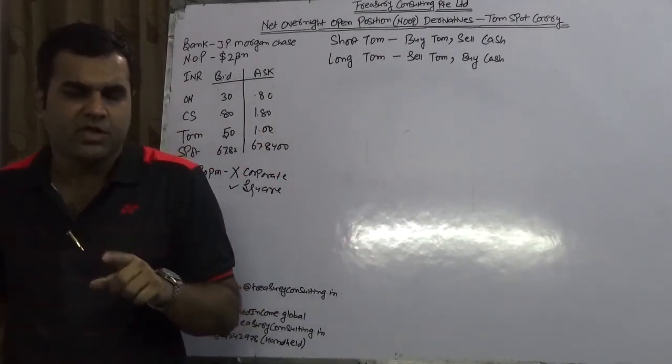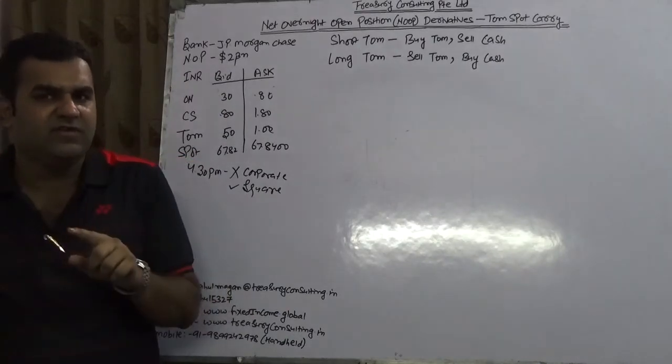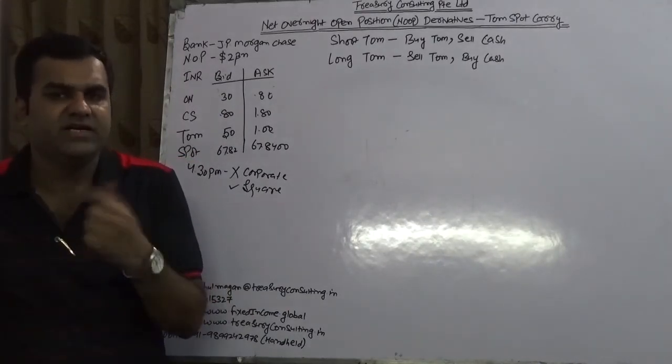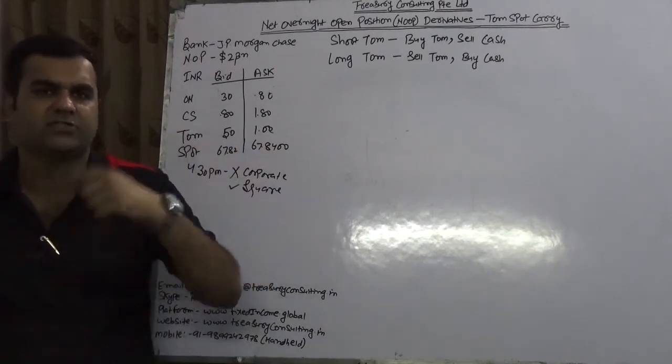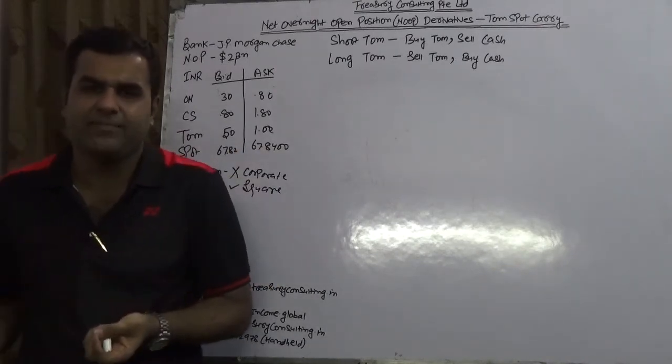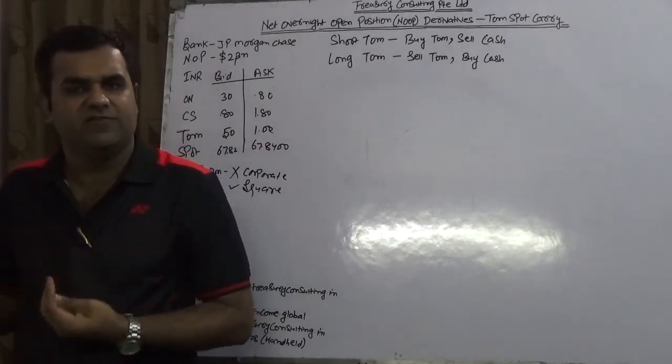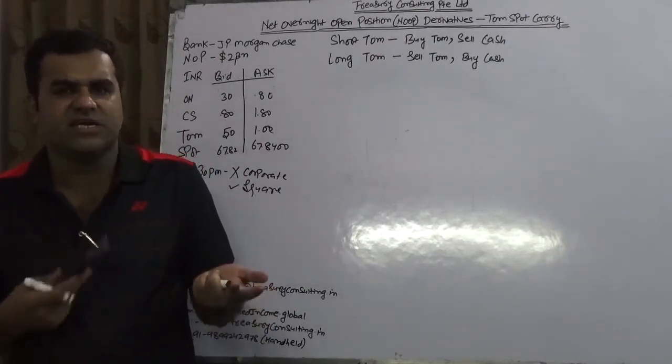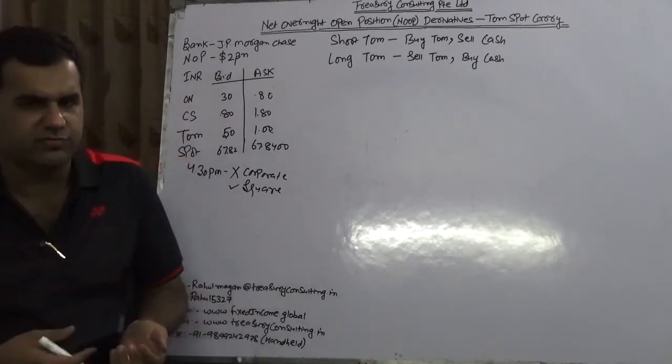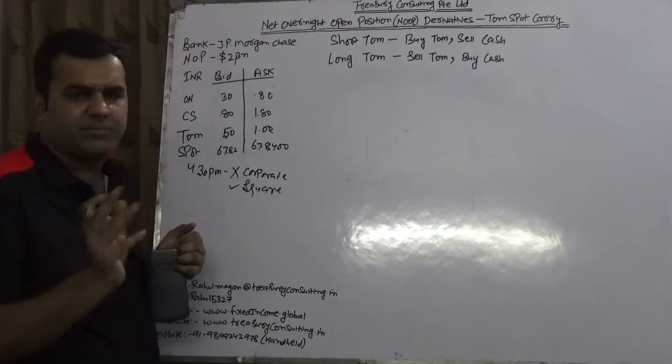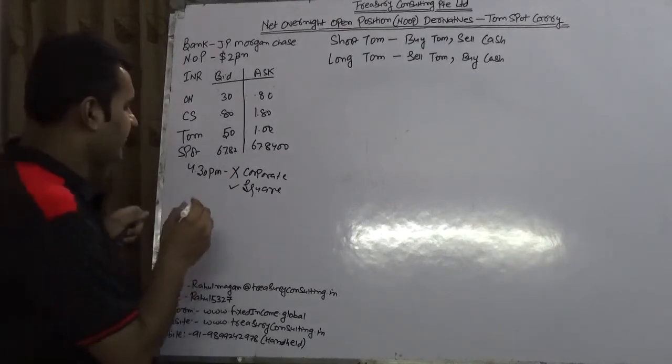Because after India it is Singapore. After 5 they will pass to London desk. If London desk will not be able to wind up they will pass to the US desk. And US desk will pass to Australia. Anyways this never happens. The reason being JP Morgan itself is able to wind it up. At 5, approximately 30 minutes here and there after 5.